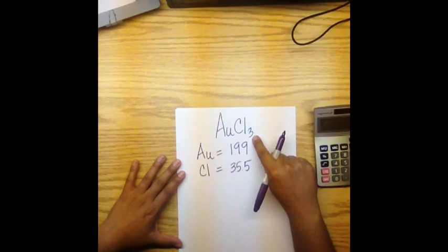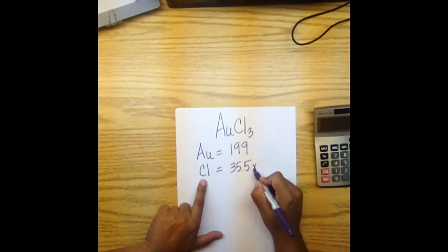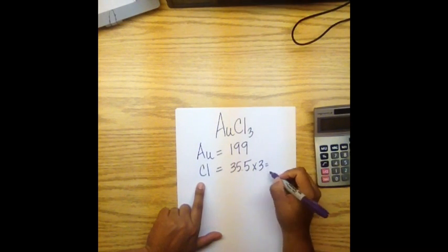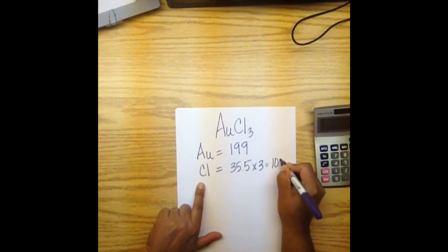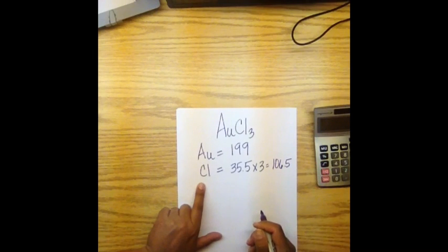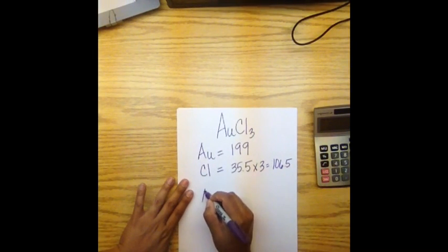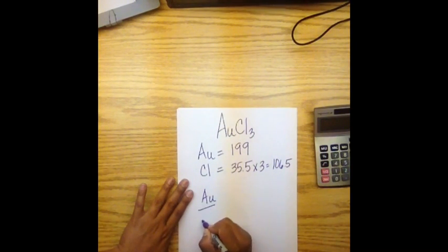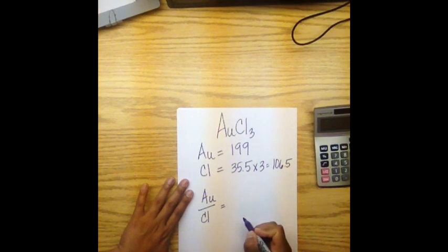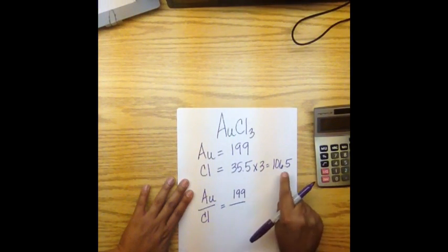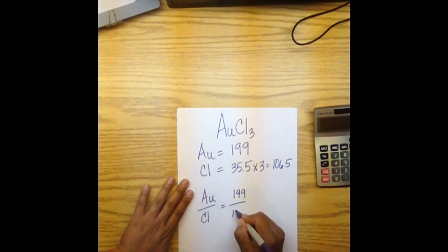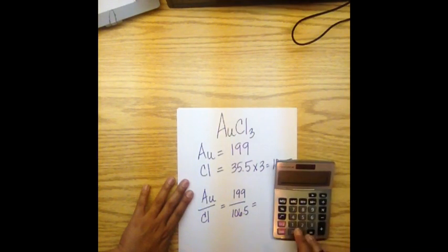The formula of gold chloride indicates that there are three chlorine atoms. This means we have to multiply the mass of chlorine by 3 to account for all the atoms in the formula. In order to calculate the mass ratio of gold to chlorine, divide the total mass of the gold, 199, by the total mass of the chlorine, 106.5.